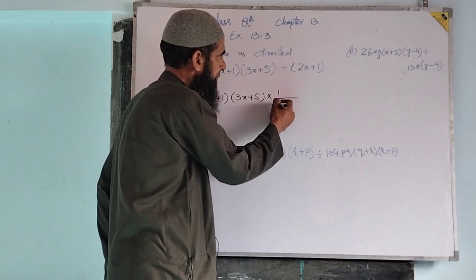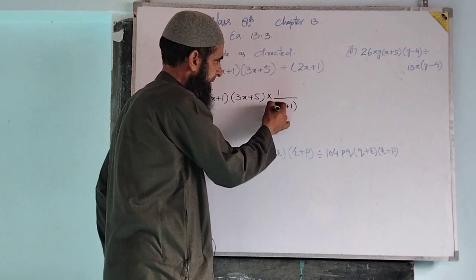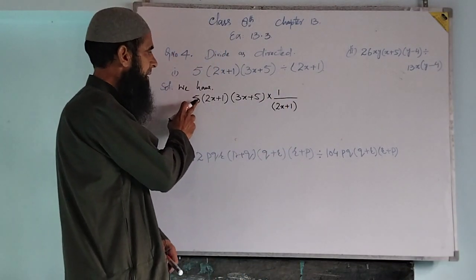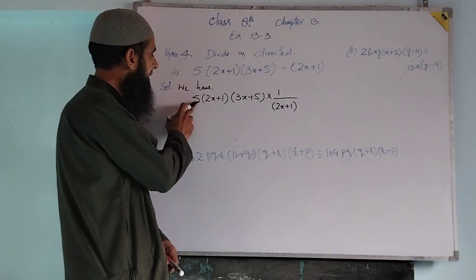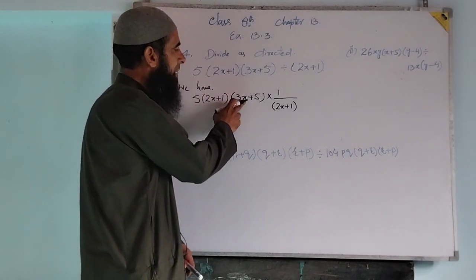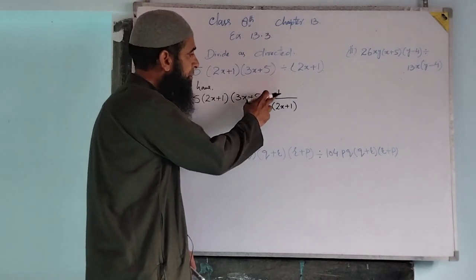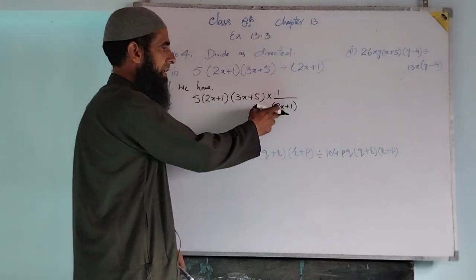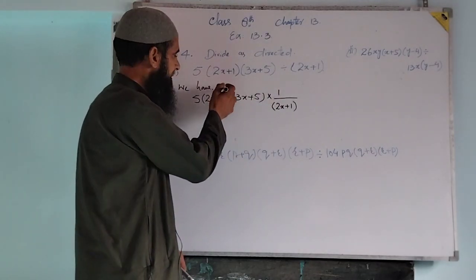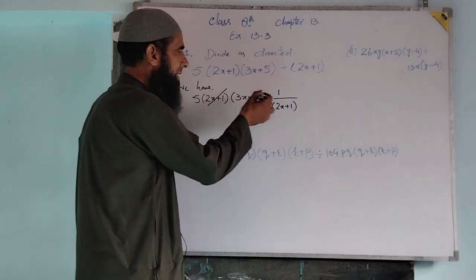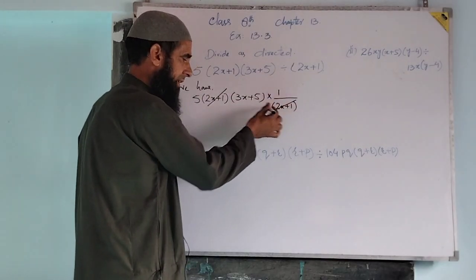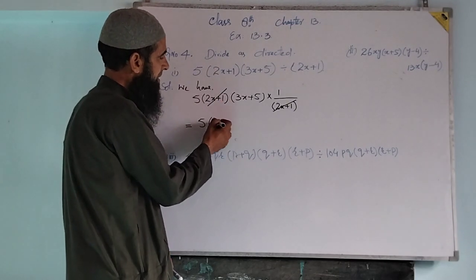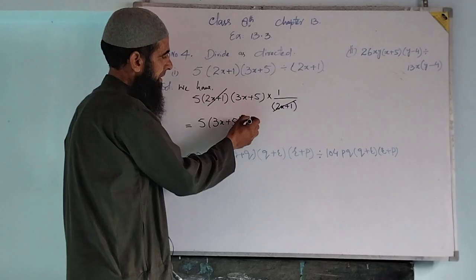The reciprocal is 1 over (2x+1). So we have 5 into (2x+1) into (3x+5) into 1 over (2x+1). Clearly, we have a common factor here — (2x+1) can be cancelled with (2x+1). The answer of this question is 5 times (3x+5).